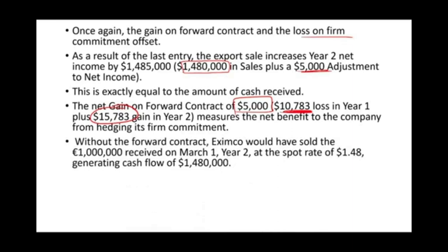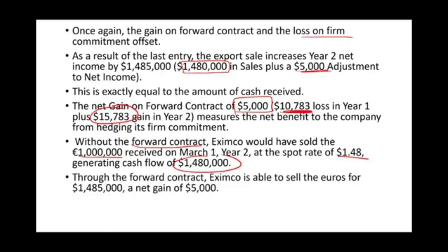Without hedging, we would have sold 1 million euros at $1.48 and received only $1,480,000. By hedging with the forward contract, we received $1,485,000 — an additional $5,000. This example uses the same scenario as prior sessions but illustrates hedging a foreign currency firm commitment using a forward contract. In the next session, a foreign currency option will be used instead.